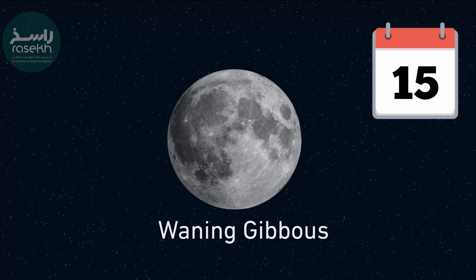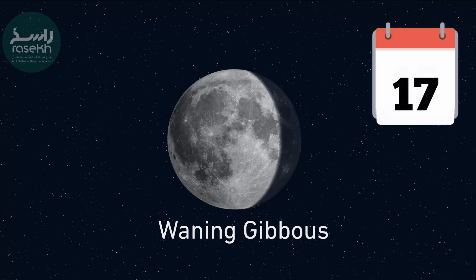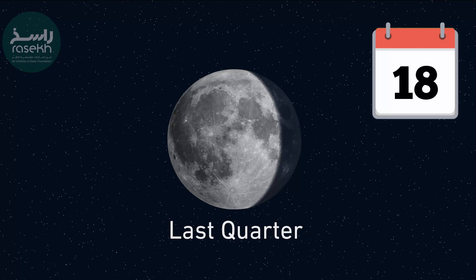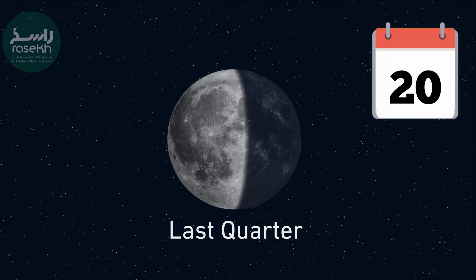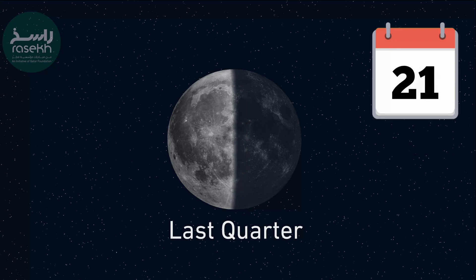Waning Gibbous: After the full moon, the illuminated portion starts decreasing, taking on a gibbous shape once again. Last Quarter: Another week later, the moon has circled 270 degrees around, and we see 50% of the lunar disk illuminated again, like a half moon.